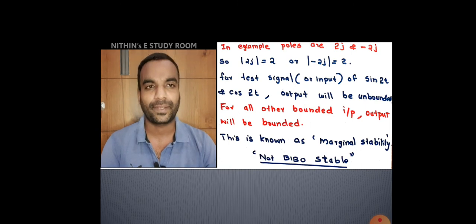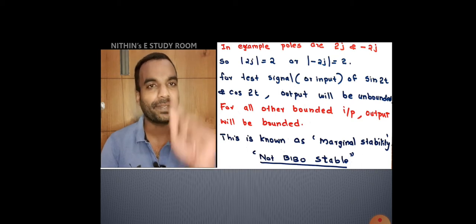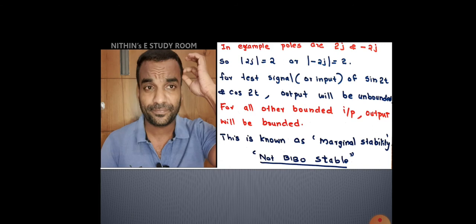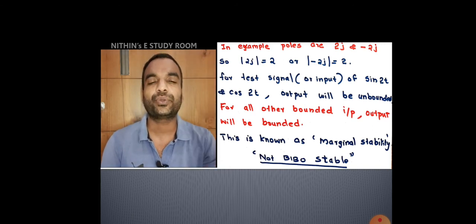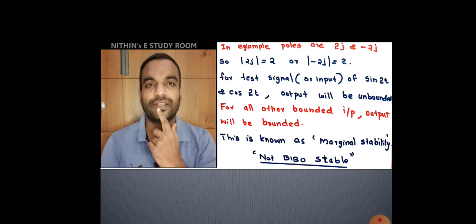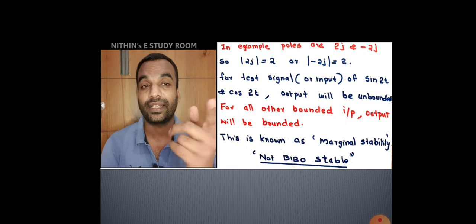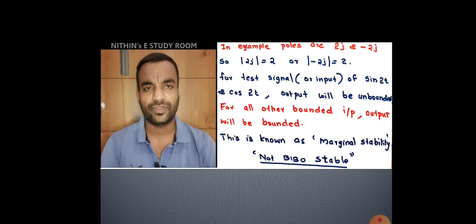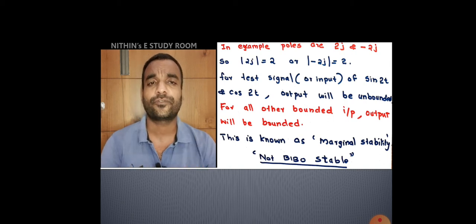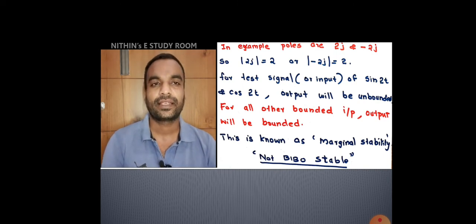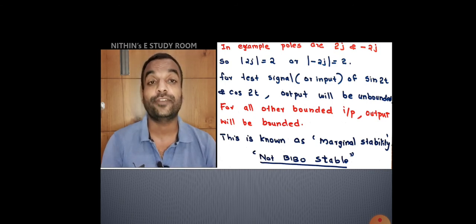Additionally, if a pole lies at s = 0 on the jω axis, it is also marginally stable — but the exception input is the step input, not a sinusoidal. This is a special case: for s = 0, the unbounded output occurs only for step input, not sine or cosine with a frequency equal to the pole magnitude.